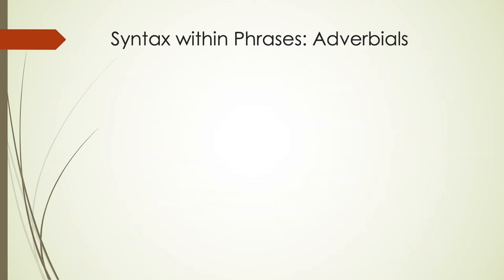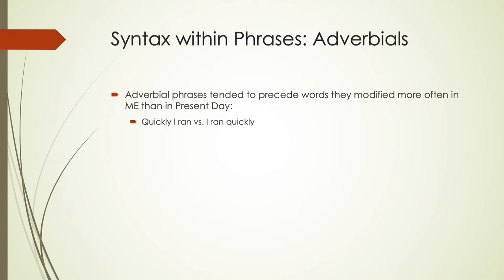Looking at adverbial phrases, these tended to precede the words they modify more often in Middle English than in present-day English. We'll see them more often as something like 'quickly I ran' versus 'I ran quickly.' In present-day English, adverbs are still the one word class that's relatively flexible — we can still move them around in sentences today. We're more likely in present-day English to use 'I ran quickly' rather than 'quickly I ran.'